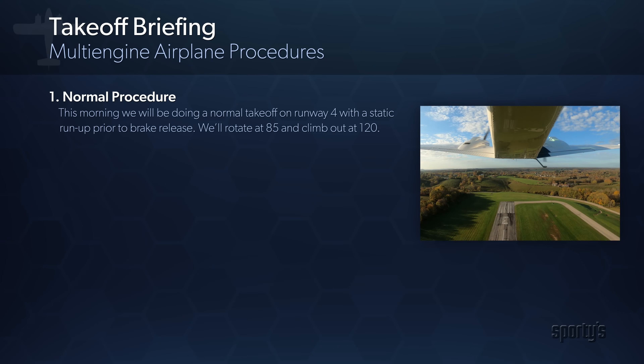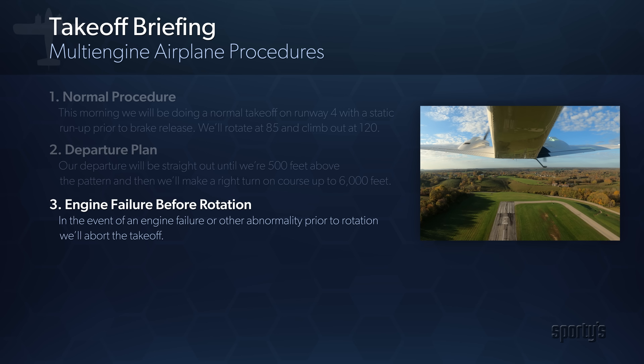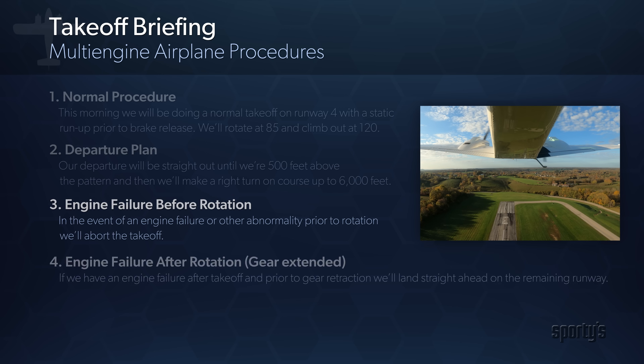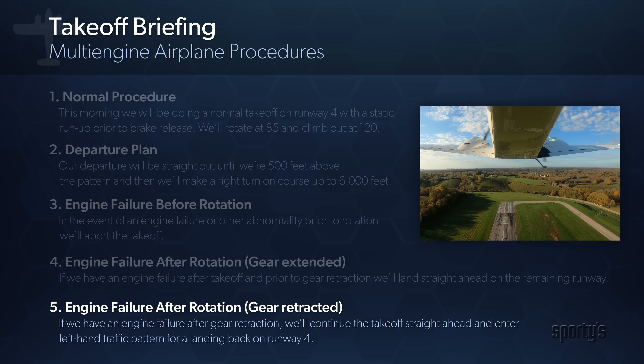A before takeoff briefing might sound something like this: 'This morning we'll be doing a normal takeoff on runway 4 with a static run-up prior to brake release. We'll rotate at 85 and climb out at 120. Our departure will be straight out until we're 500 feet above the pattern and then we'll make a right turn on course up to 6,000 feet. In the event of an engine failure or other abnormality prior to rotation, we'll abort the takeoff. If we have an engine failure after takeoff or prior to gear retraction, we'll land straight ahead on the remaining runway. If we have an engine failure after gear retraction, we'll continue the takeoff straight ahead and enter a left-hand traffic pattern for a landing back on runway 4.'